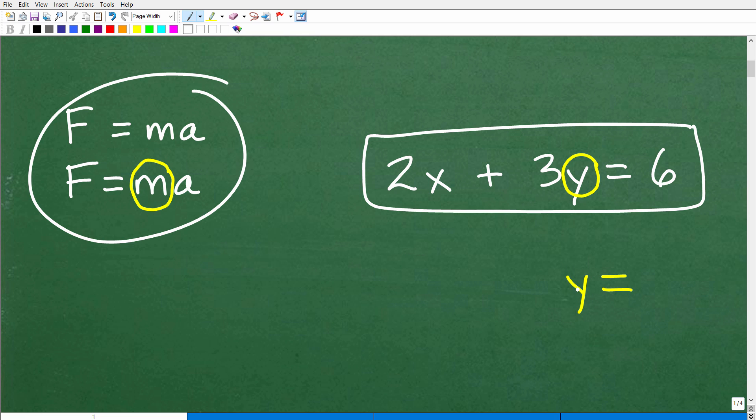But effectively, what we want to do is to rewrite this equation in terms of y. So when we're done, we have y equals and then we're going to have whatever else over here. So that's our first task. Now, in order to do that, let's make sure you know how to do a simpler version of this task, which is solving for a particular variable in an equation or formula.